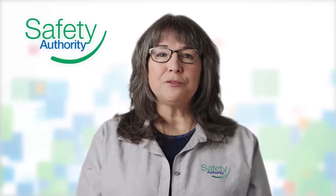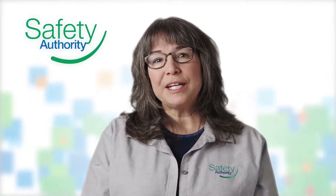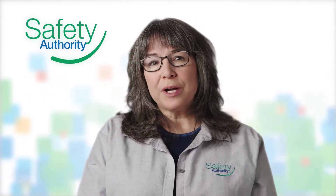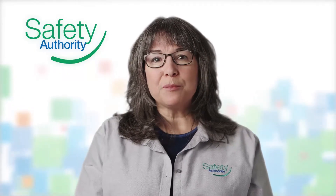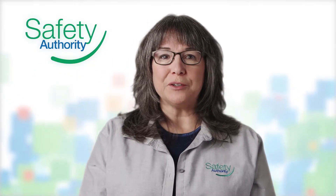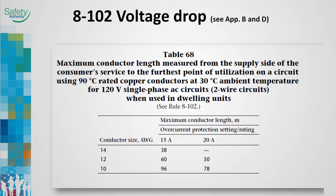This new sub rule and voltage drop table provides users with a quick reference to determine the maximum circuit length for dwelling units. Table 68 can be applied when the total length of the branched circuit or feeder is measured from the supply side of the consumer service to the farthest point of utilization in a general lighting or receptacle circuit. Where the installation does not lend itself to using Table 68, voltage drop calculations should be performed using Sub Rule 1.